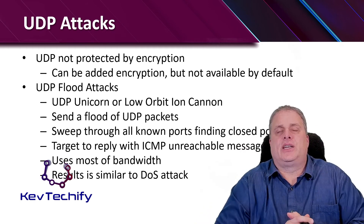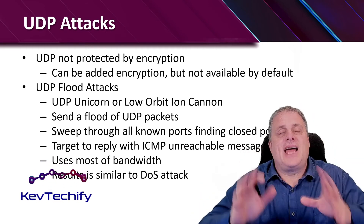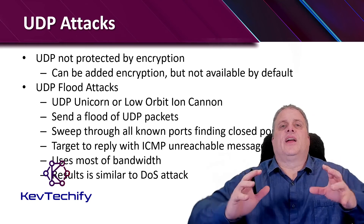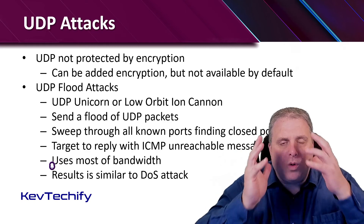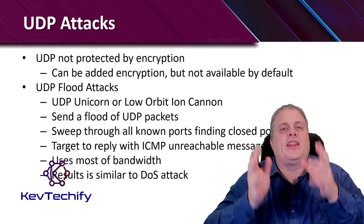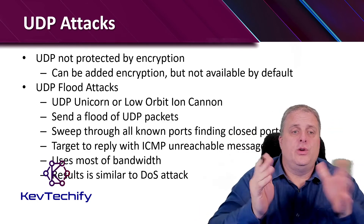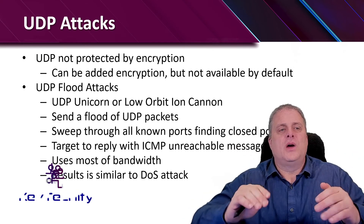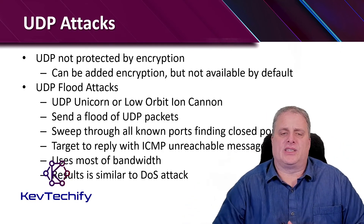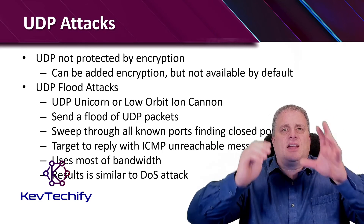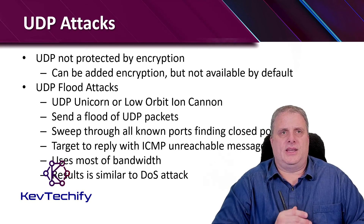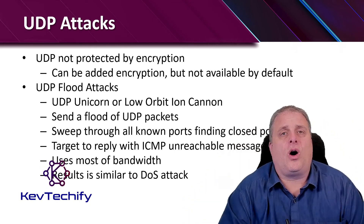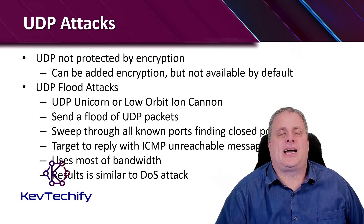UDP is not protected by any type of encryption by default — you can add encryption, but it's not available out of the box. Most commonly we see UDP flood attacks, where a large amount of UDP information is sent at a target, overwhelming them so that legitimate traffic can't get through. Tools like UDP Unicorn and Low Orbit Ion Cannon perform UDP flood attacks. They send a flood of UDP packets that sweep through all known ports, find the closed ports, and target them to reply with ICMP unreachable messages. This uses almost all the available bandwidth and is very similar to a denial-of-service attack.